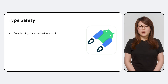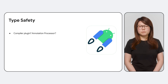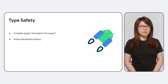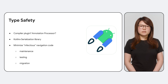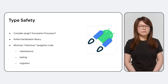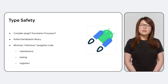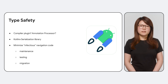We explored several ways to do that, including Kotlin compiler plugins and annotation processors. In the end, we decided on a solution based on the KotlinX serialization library. One of the key principles of the navigation library is to minimize how infectious navigation code is. This helps with code maintenance and testing, and also makes it easier to swap out your navigation library for another one.